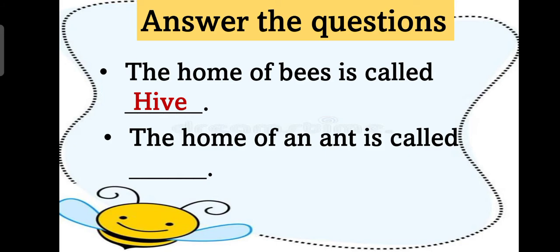And now we will discuss the first answer. The home of bees is called hive. And the second is the home of an ant is called, or ant means cheety. Anthill. So please try to remember this, try to learn this name anthill, ant home anthill.